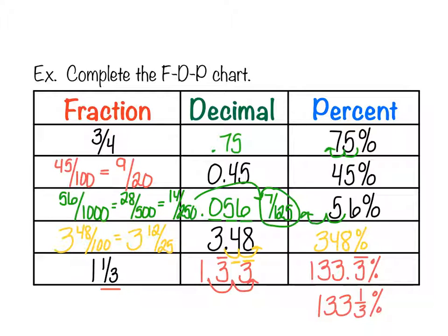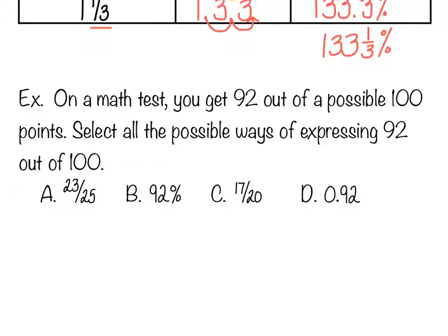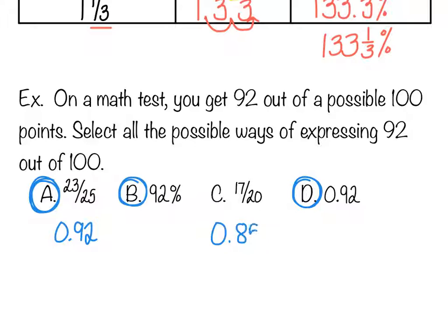On a math test you get 92 out of a possible 100 points — select all ways of expressing 92 out of 100. Percents literally mean out of 100, so 92 percent works. As a decimal, 0.92 works. For fractions, 23/25: doing 23 divided by 25 gives 0.92, so that works. But 17/20: doing 17 divided by 20 gives 0.85, so that one does not work. There are three correct answers.